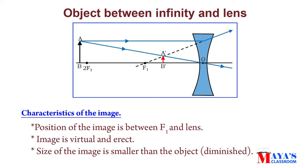In the case of a concave lens, the position of the image is between the lens and F1. The image is virtual and erect. The size of the image is smaller than the object — that is diminished.